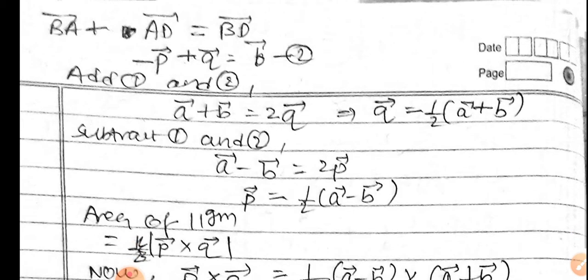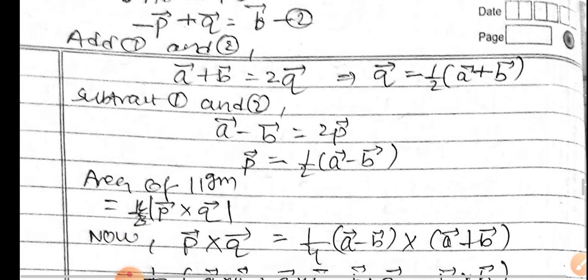a equals 1/2(a vector + b vector). b equals 1/2(a vector - b vector).